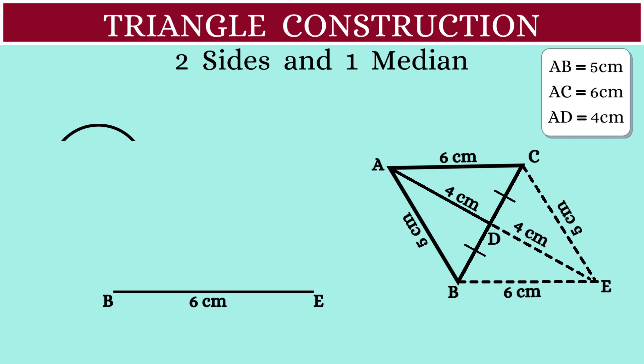Then, with E as the center and a radius of 8 cm, draw another arc which cuts the previously drawn arc at point A. Let us now join AB and AE.